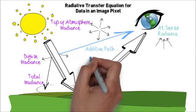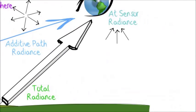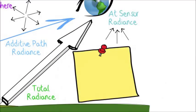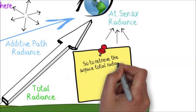Now, some of that energy scattered within the atmosphere will actually even make it back to the sensor without even making contact with the ground. Okay, so our satellite sensor measures at sensor radiance.